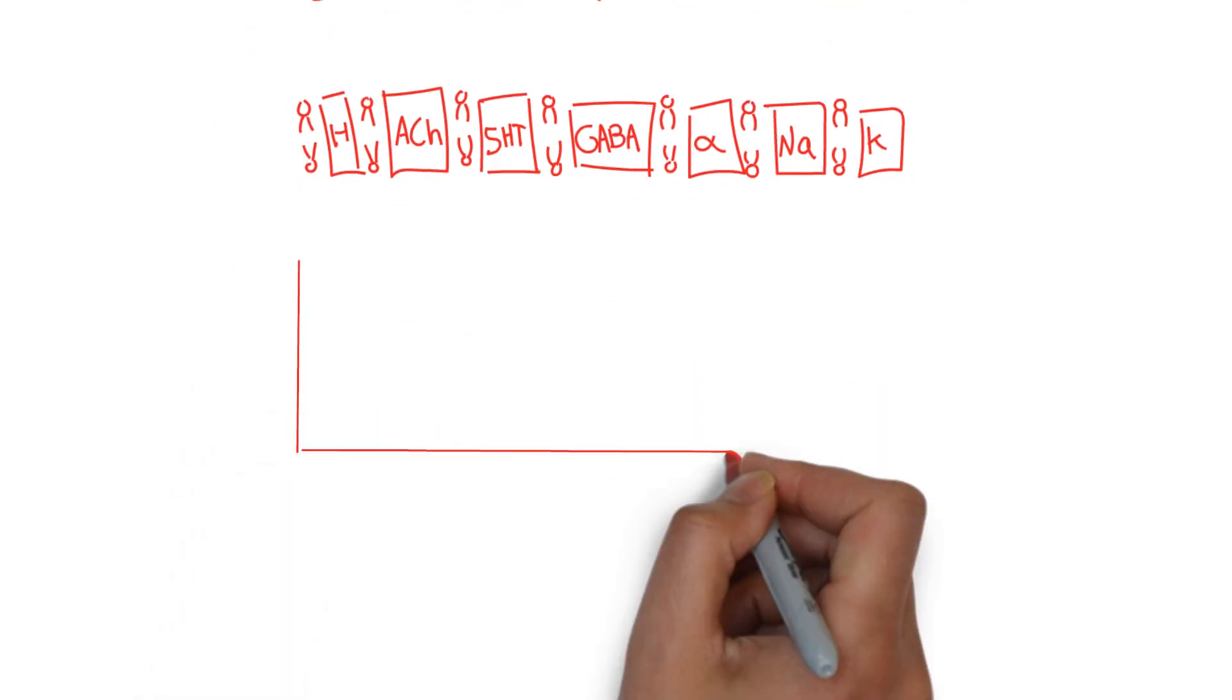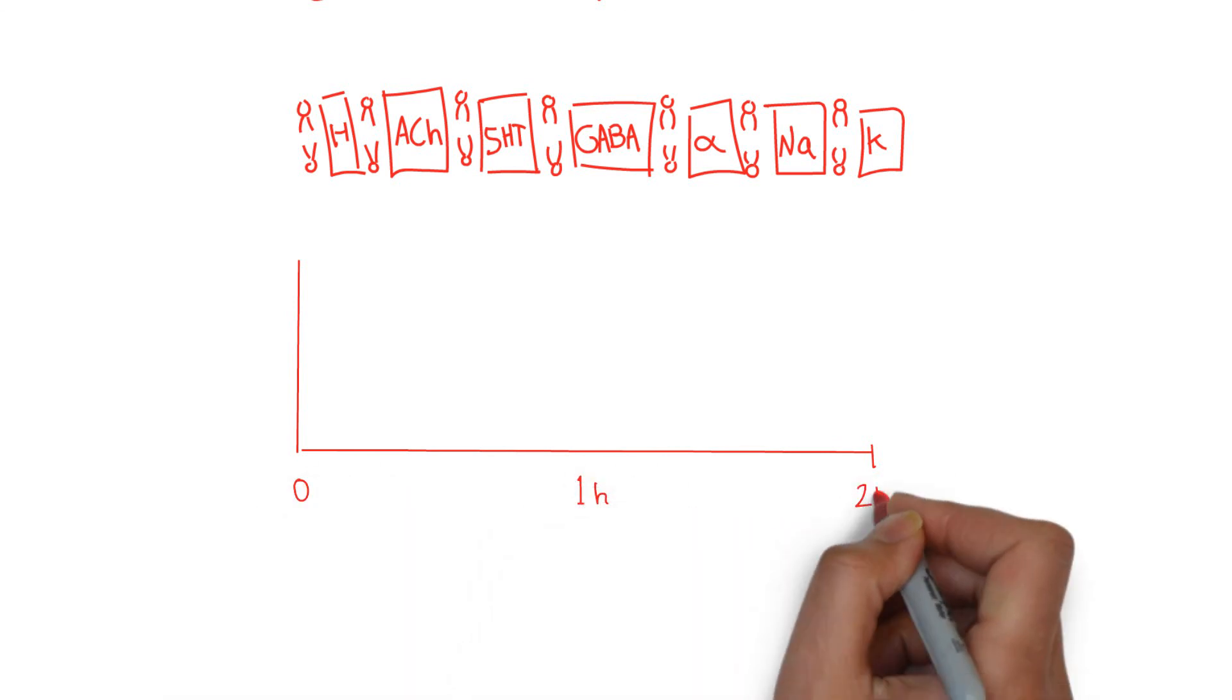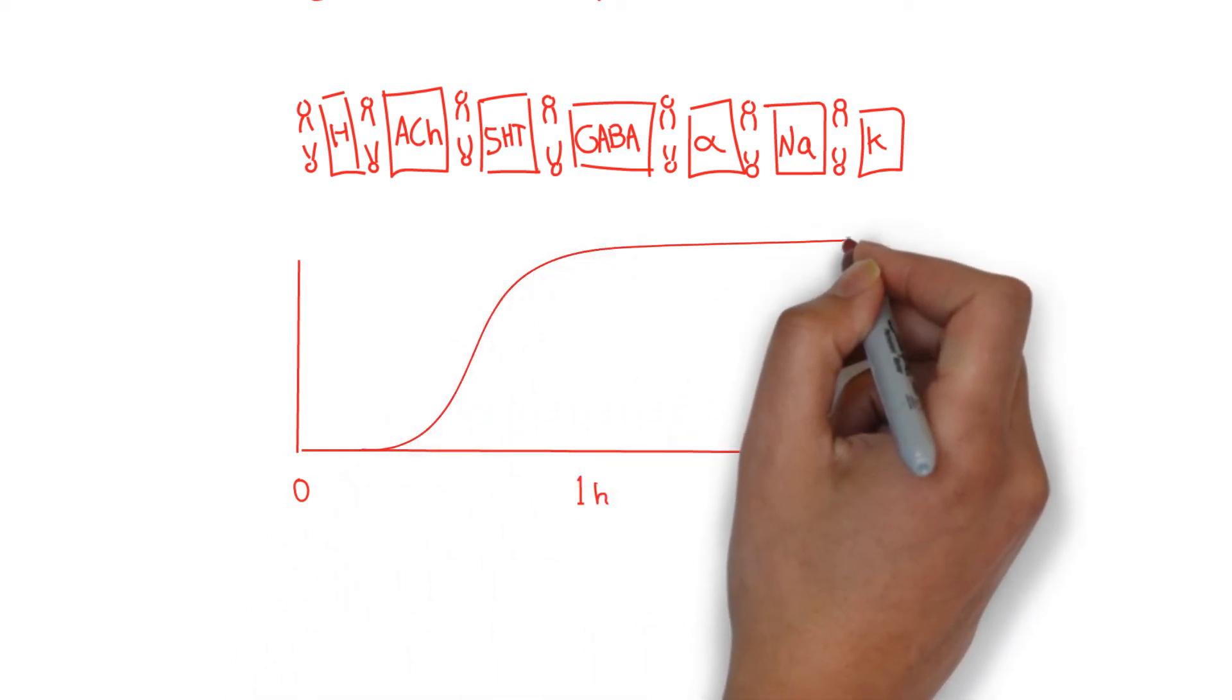What does this look like clinically? Here is a typical time course for TCA overdoses, though every patient can present somewhat differently. Time zero is time of ingestion. TCA is rapidly absorbed, and by 30 minutes, some patients already demonstrate effects, mostly anti-histaminergic, appearing very sleepy.